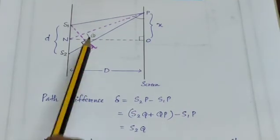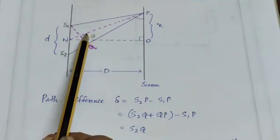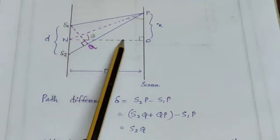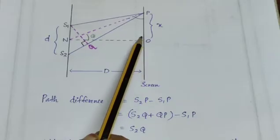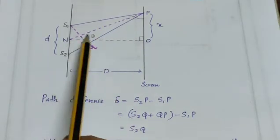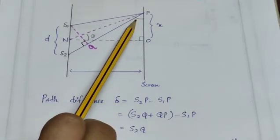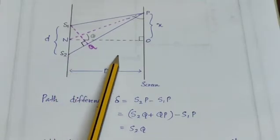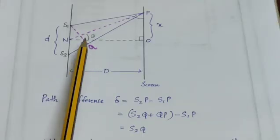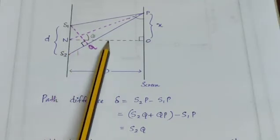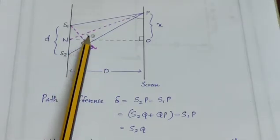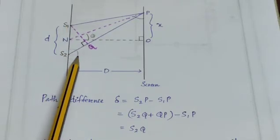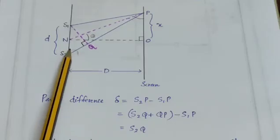In this figure, we consider triangle PNO where the angle at N is 90 degrees and the angle is theta. The angle theta in triangle S1S2Q is also theta, making the two triangles — S1S2Q and PNO — similar by the AA similarity condition.